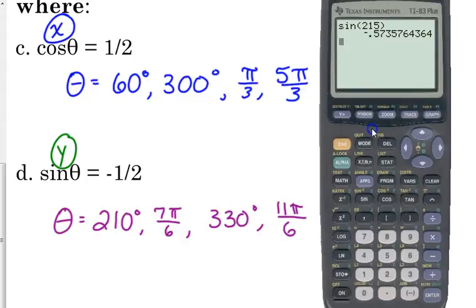Just do this. I'm in degree mode right now. So, I'm going to type in sine of 210 degrees. Negative 1 half. I'm going to type in the sine of 330 degrees. Negative 1 half.